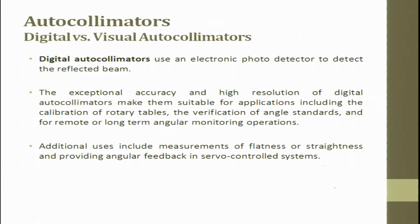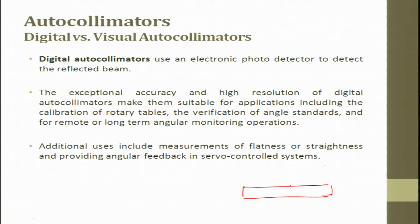This angular deviation comes on the flat surface whenever you want to do a precise measurement. We will always try to take a flat surface where precision is already there, but still you want to find out what is the deviation in the flatness — then we use this autocollimator.